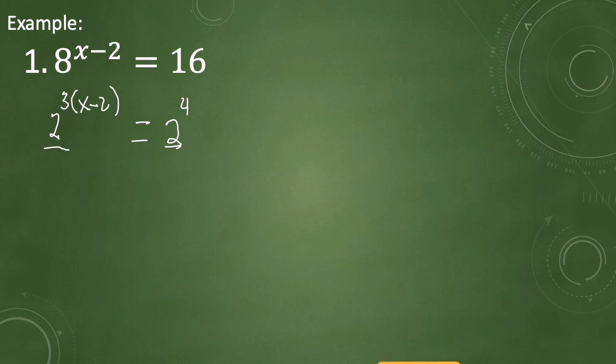We can use the property that when a raised to b equals a raised to c, we can drop the base, and simply equate both exponents. So we have 3 times x minus 2 equals 4.